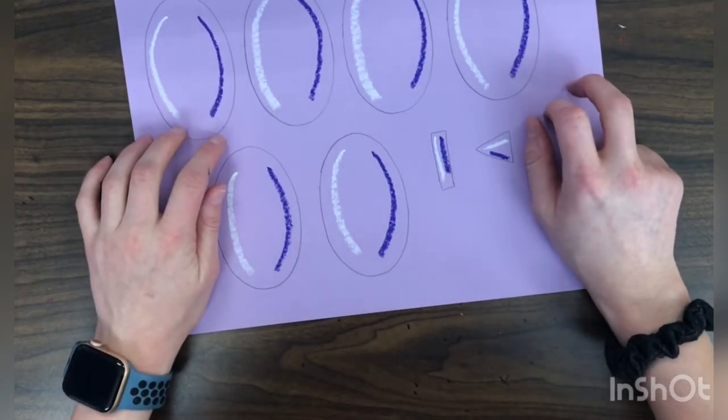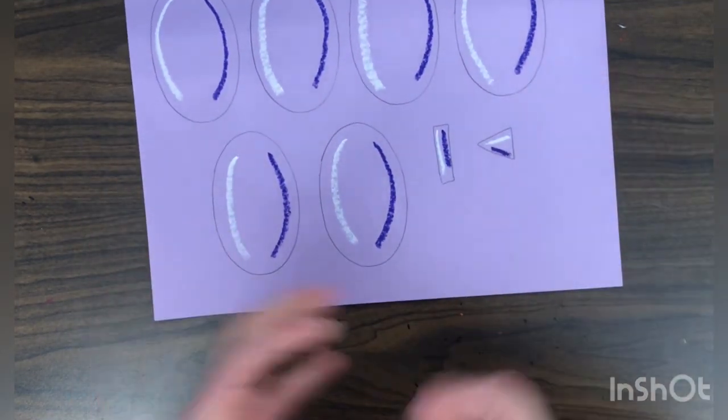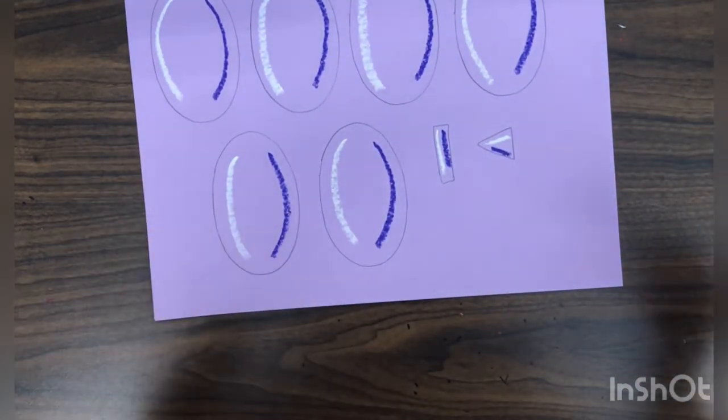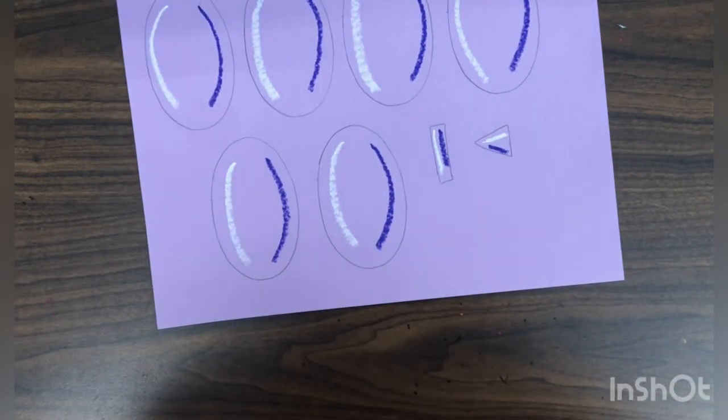This is all we're going to be doing today. If you want to, you can go ahead and cut out all of your shapes and save them in a ziploc bag. Or you can wait till next time to cut them out and assemble our balloon dog together. I hope you guys have so much fun. Happy creating!